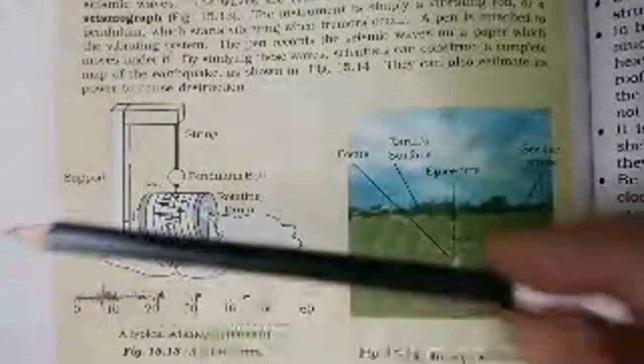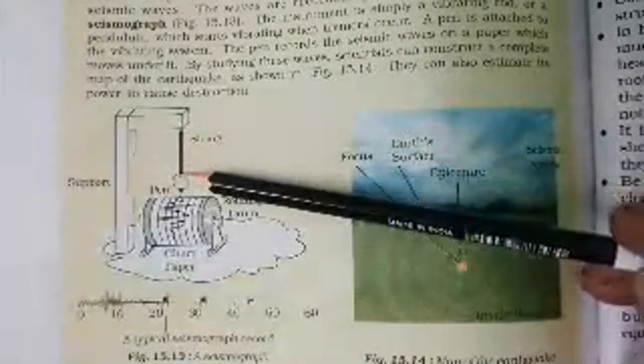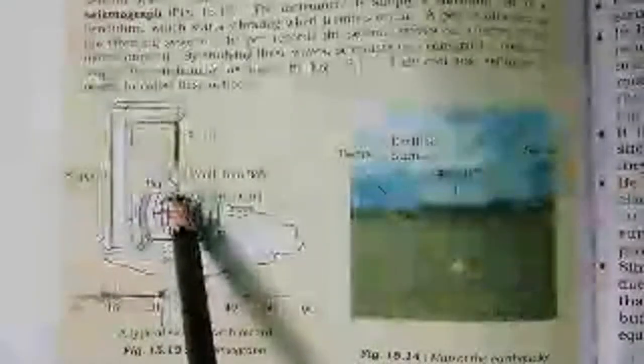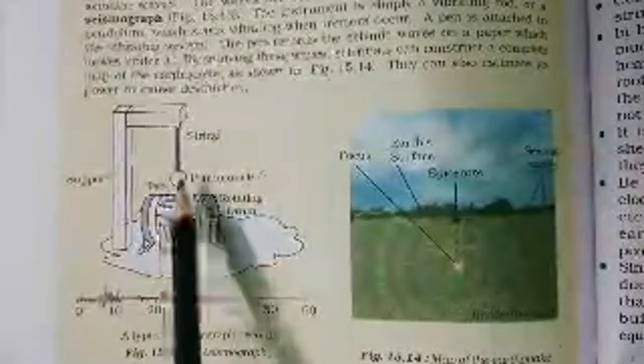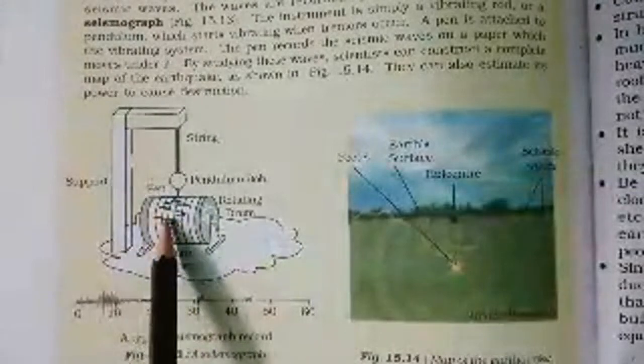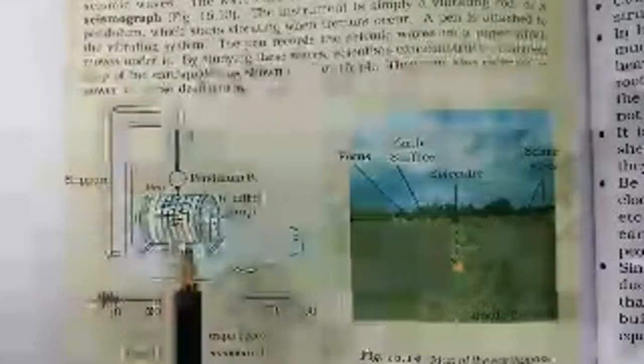A seismograph is the instrument used to detect and measure earthquakes. In the ancient type, there is a roller wrapped in paper and a pendulum touching the roller. As the roller turns it draws a line; when an earthquake occurs the roller shakes, the pendulum moves, and the line on the paper becomes curved rather than straight. Greater movement means a larger earthquake reading.